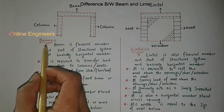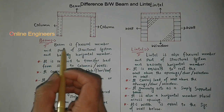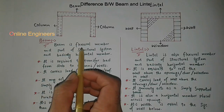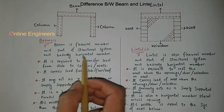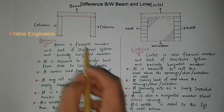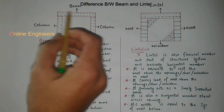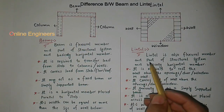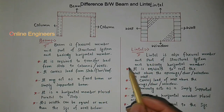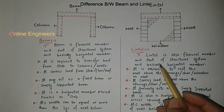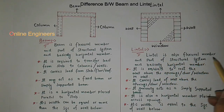What is a beam? The definition of beam is: a beam is a flexural member and part of a structural system, and it is basically a horizontal member.